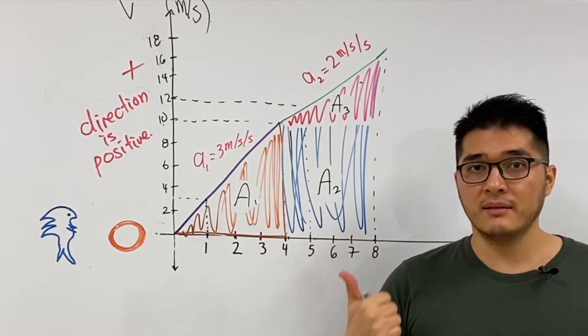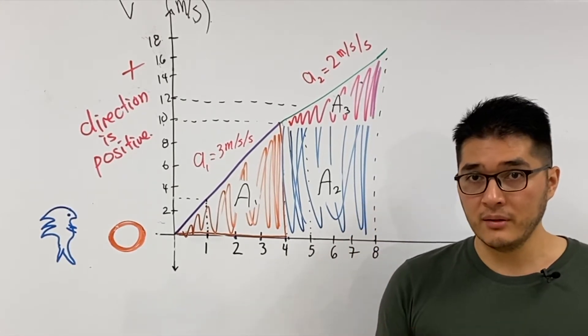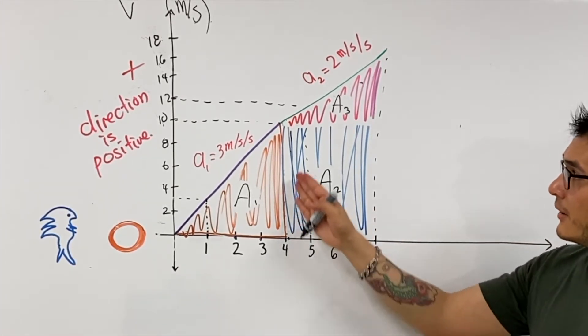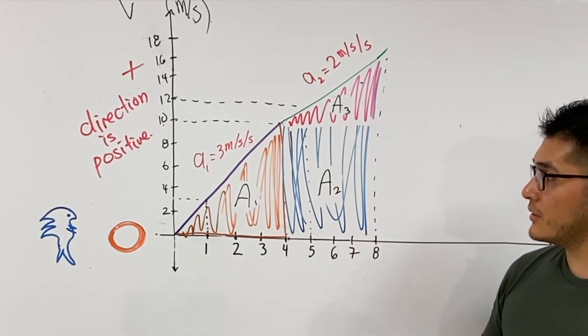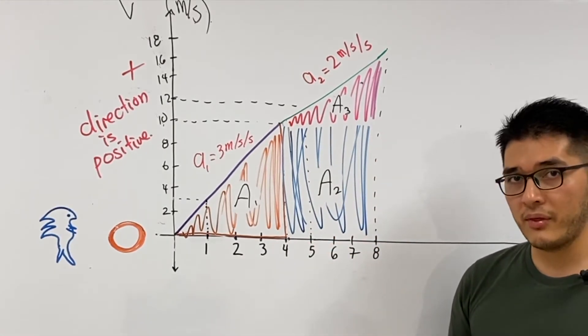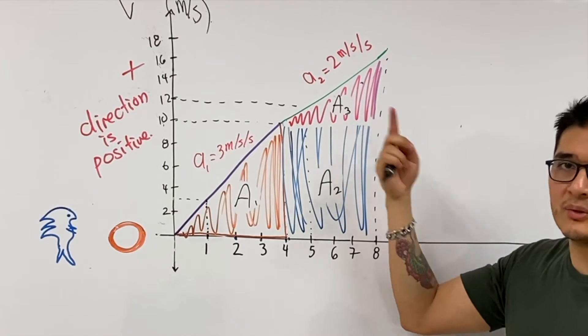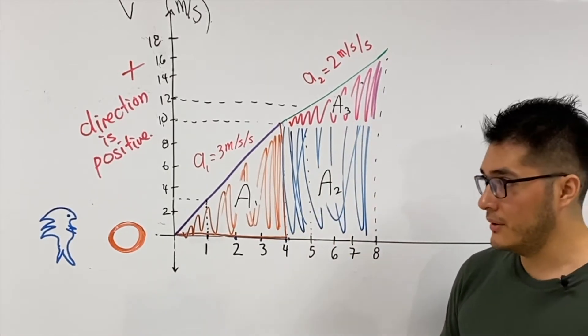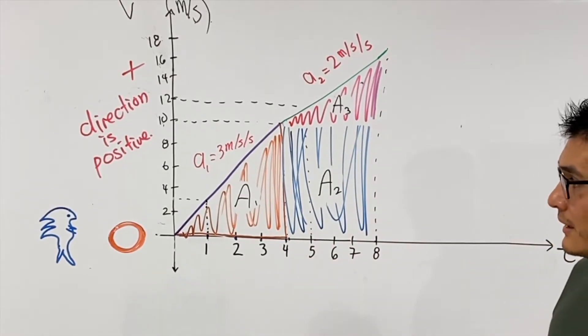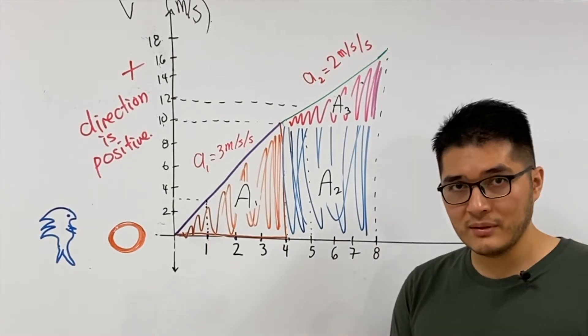Area one is just the area of a triangle, which if you recall, the formula is the base times the height divided by two. Area two, which is just a rectangle, is the length times the width. Area three is again base times the height divided by two. So let's do those calculations.